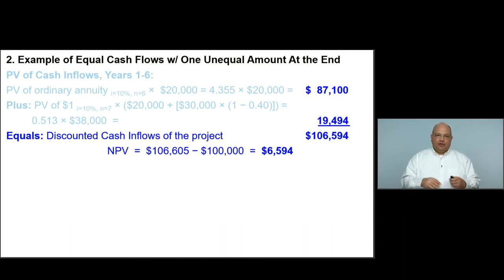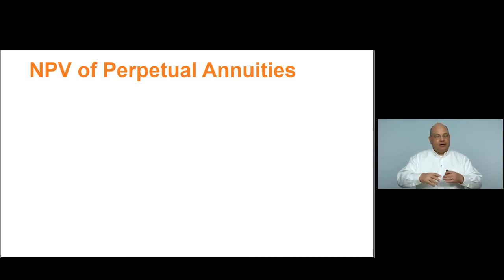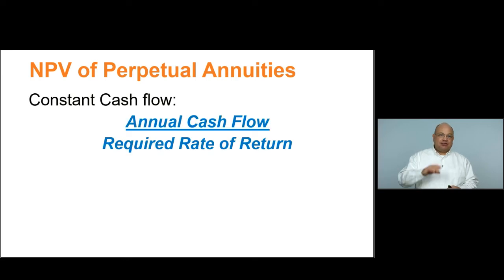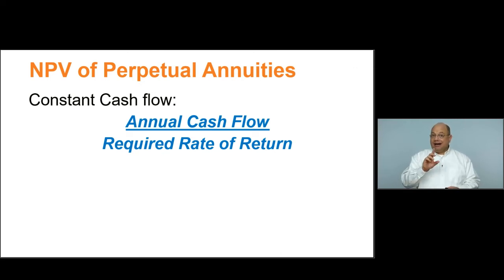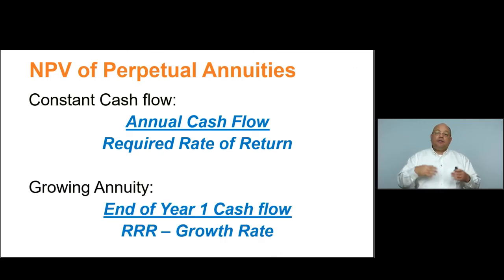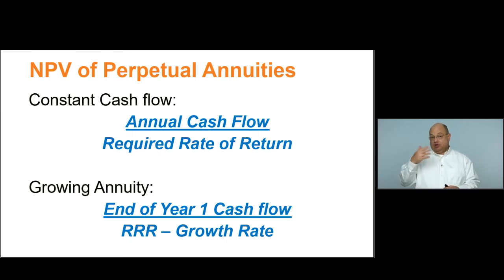The next two examples cover the net present value of perpetual annuities — where money is received forever, not just seven or seventy years. There are two situations: constant cash flow and growing cash flow. For a constant perpetual cash flow, the formula is simple: annual cash flow divided by the required rate of return. For a growing perpetual annuity, it's the end-of-year-one cash flow divided by the required rate of return minus the growth rate. A growing annuity will have a larger present value since we're discounting larger numbers each year.